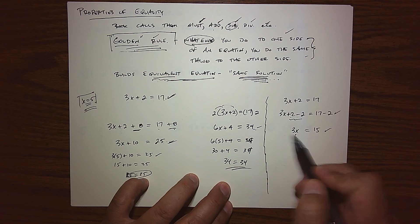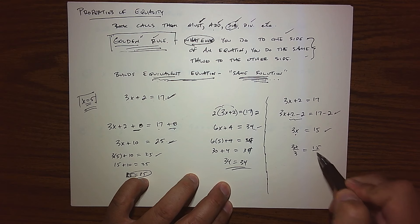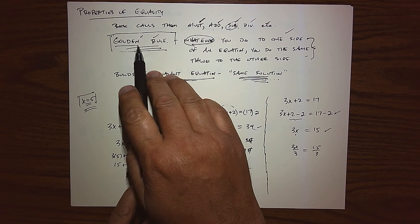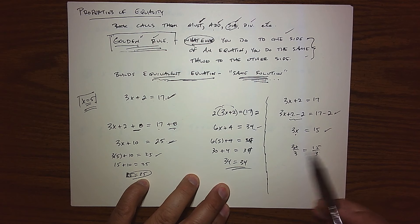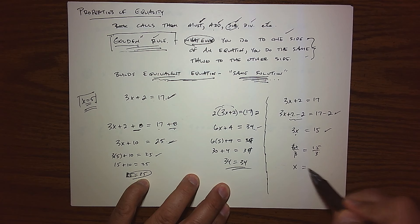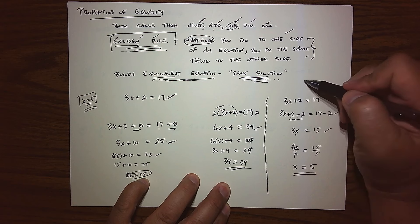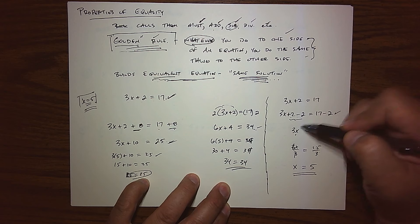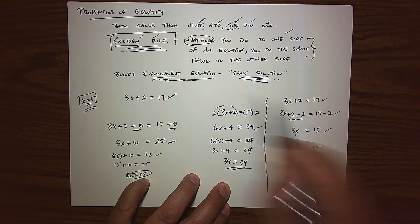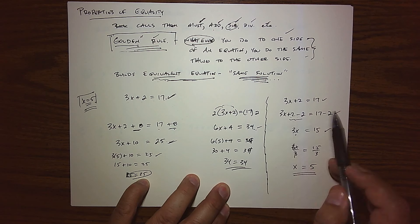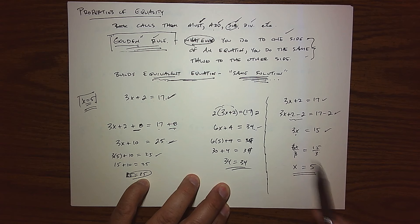Let's keep going because we need to get x by itself. My next balancing act: divide both sides by 3. I'm using the golden rule, dividing both expressions by 3. On the left, the 3s divide out leaving us with x, and 15 divided by 3 is 5. And there's the solution we knew about from the very beginning. This is the more mathematically efficient way to solve the equation — using the golden rule to whittle it down until we find the value that makes it true.